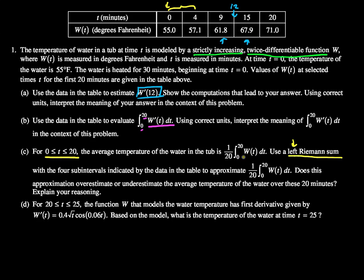The integral from 0 to 20 of W(t) dt, so we want to evaluate 1 over 20 multiplied by the integral from 0 to 20 of W(t) dt. And that will equal, not exactly because we're going to approximate it with our rectangles.